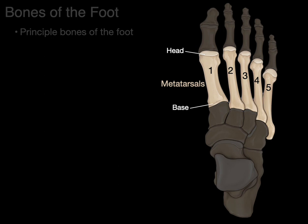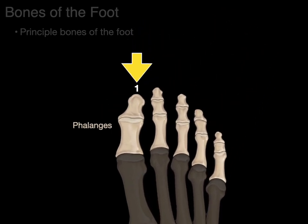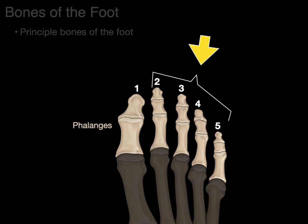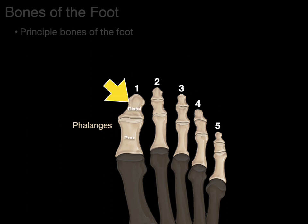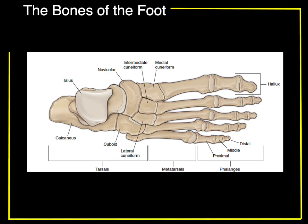Finally, we have the phalanges. There are five of them. The first phalange is known as the hallux, which is Latin for great toe — this is your big toe. Then we have the second, third, fourth, and fifth phalanges. Toes two through five are called the lesser toes because they're not as big as the big toe. The great toe has a proximal and a distal phalange, whereas all the lesser toes have proximal, middle, and distal phalanges. And that, my friends, is an overview of the bones of the foot in a nutshell.